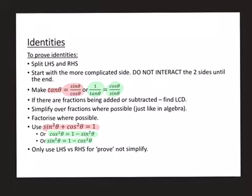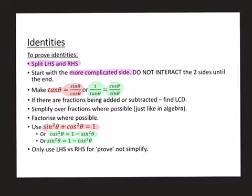So now when we're talking about proving identities, that is a little bit different. You'll be given a question where they say 'prove that' and give you something that equals something else. You've got to get the left-hand side to look like the right-hand side, or vice versa. The first thing you're going to do is split your left and right. Then you're going to start with the more complicated side. Do not interact the two sides until the end.